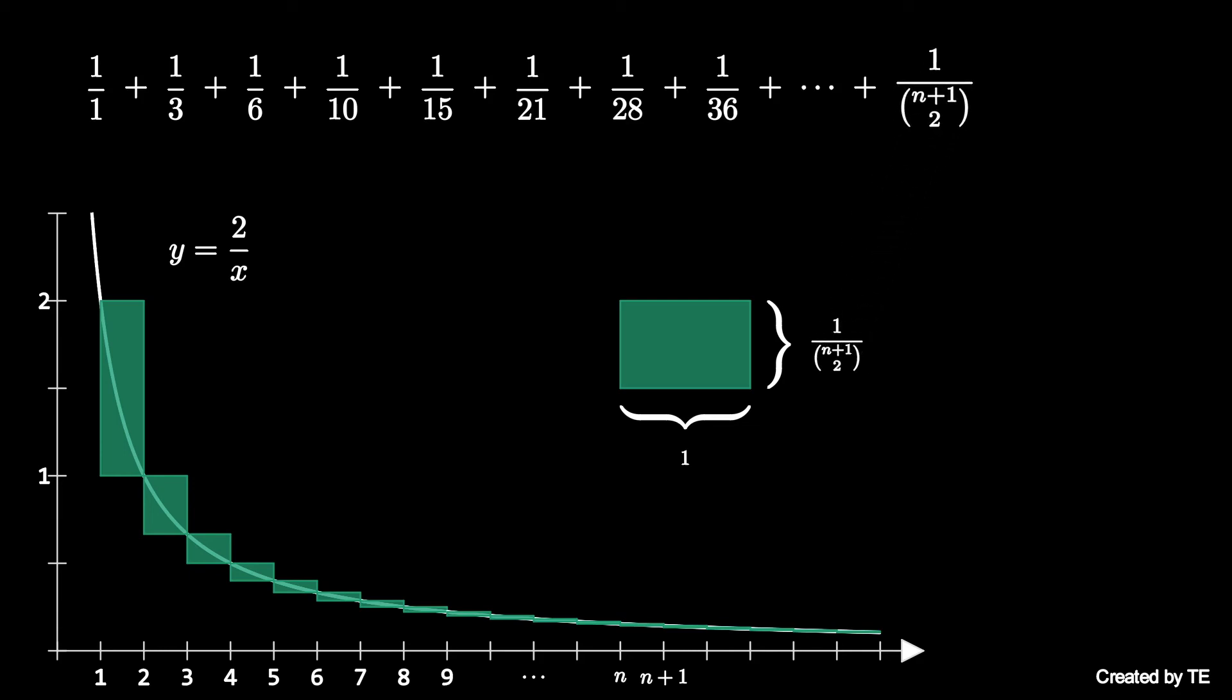Therefore, the area of this rectangle is 1 over n plus 1 choose 2. Now, we can stack all these rectangles on top of one another and fit into a larger rectangle.